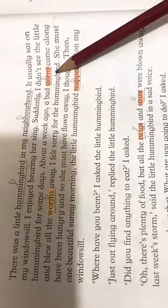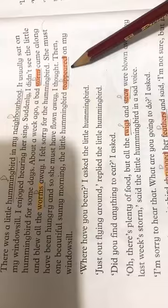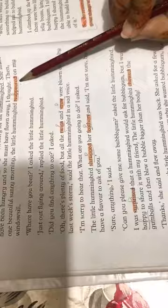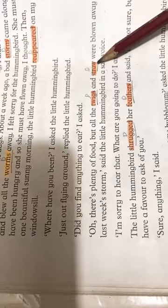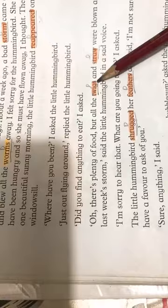Storm means toofan. Reappeared means dubara se namudar hona, dubara se zahir hona. Reappeared means appeared again. Worms, insect, straw - it's a kind of thin wood or thin piece.